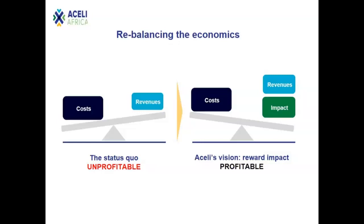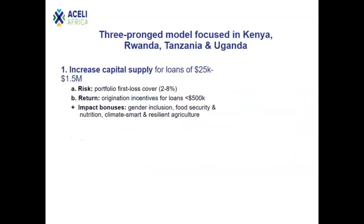Over the years, donors have gravitated towards credit guarantees as a solution to share risk with lenders. But the data shows that those guarantees — usually structured as 50% risk sharing on a loan-by-loan basis — only address about one-quarter of the financing gap. Acelli Africa's approach is relatively simple in concept: use subsidy smartly to rebalance this equation. This approach is not all that different from what middle and high-income countries do to stimulate investment in strategic sectors of their economy. The question is not whether to provide financial incentives to the private sector, but how to target those incentives to promote competition, generate measurable direct impact, and reduce the need for subsidy in the future.